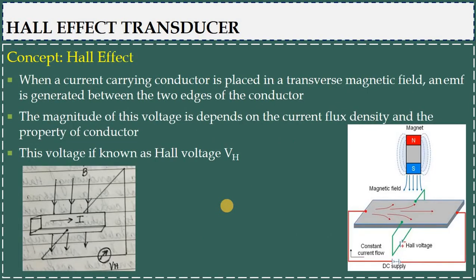To summarize the Hall Effect: when a current-carrying conductor is placed in a transverse magnetic field, an EMF is generated between the two edges of the conductor. Now, if I take this simple diagram to illustrate further...